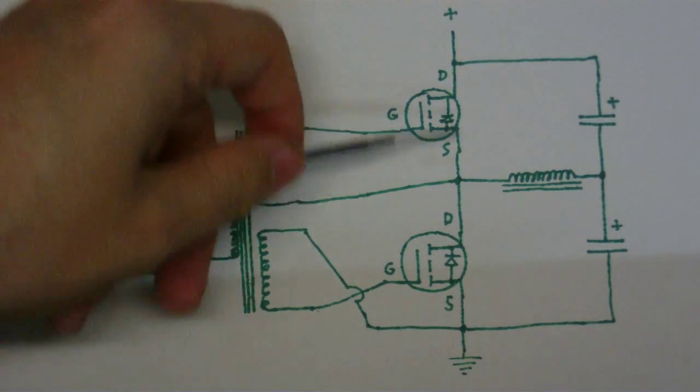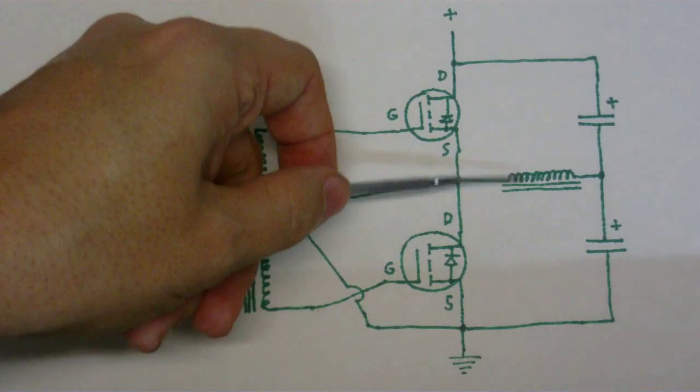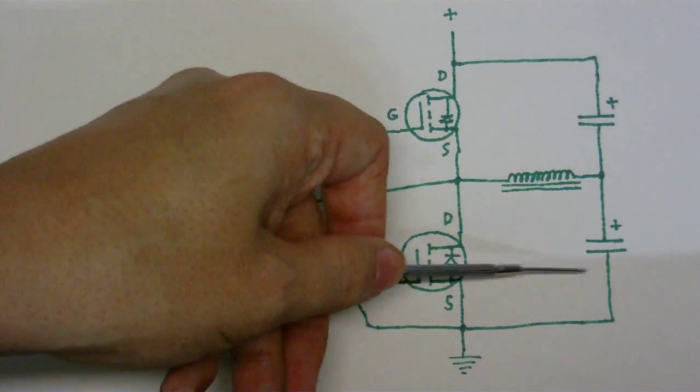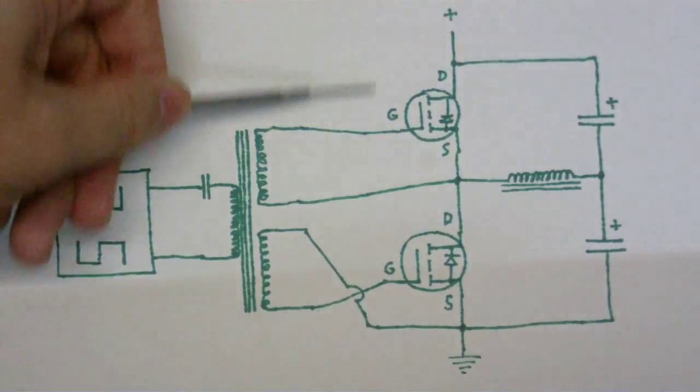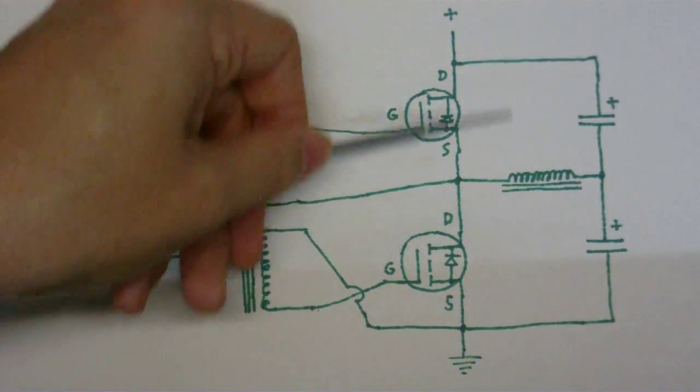And on the end of that, we've got the MOSFETs and whatever it's powering, usually a flyback primary or a Tesla coil or something like that. And a couple of capacitors, and this part of the circuit is the actual half-bridge.